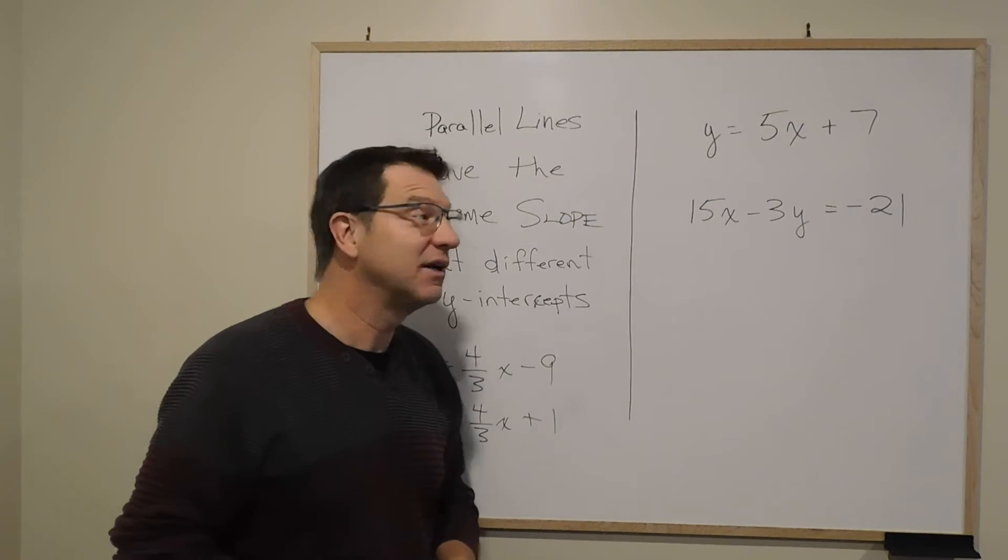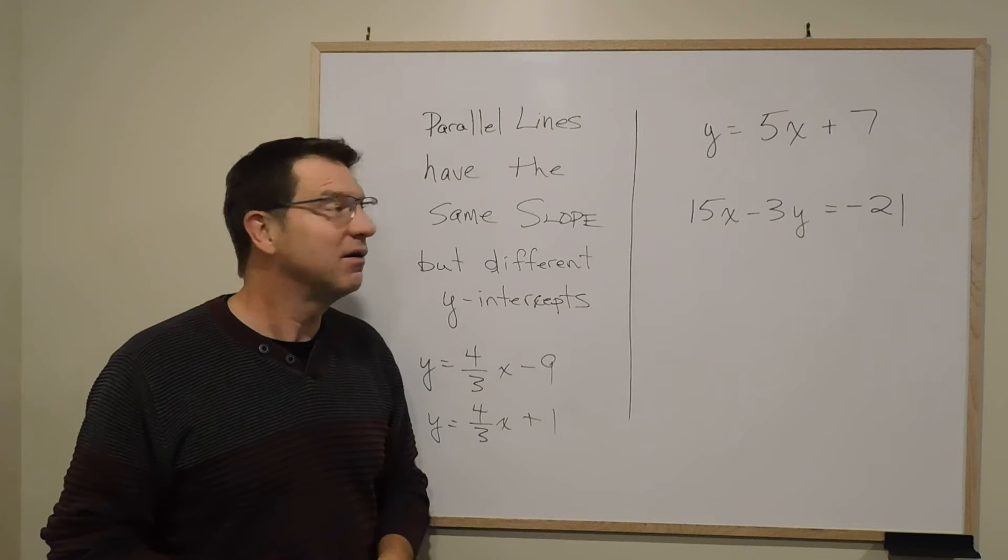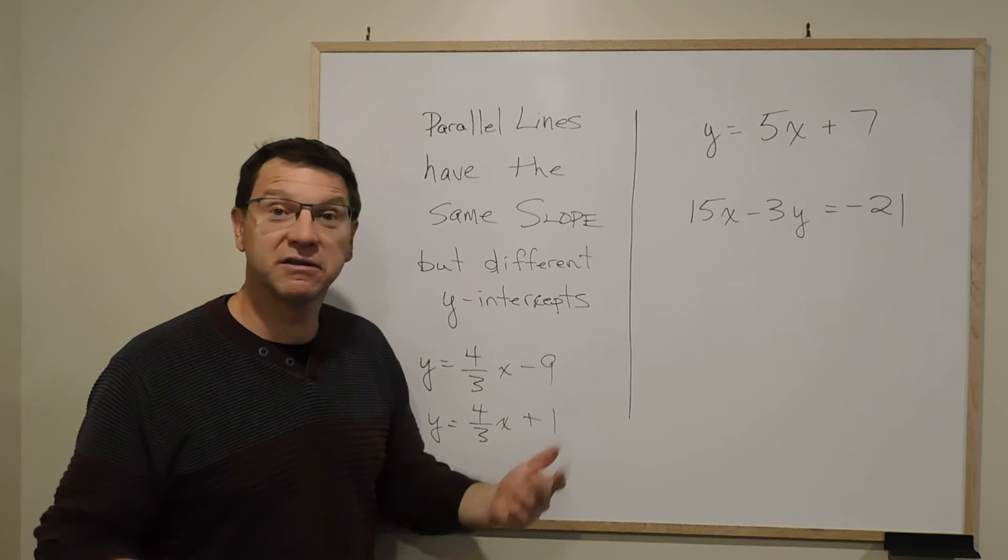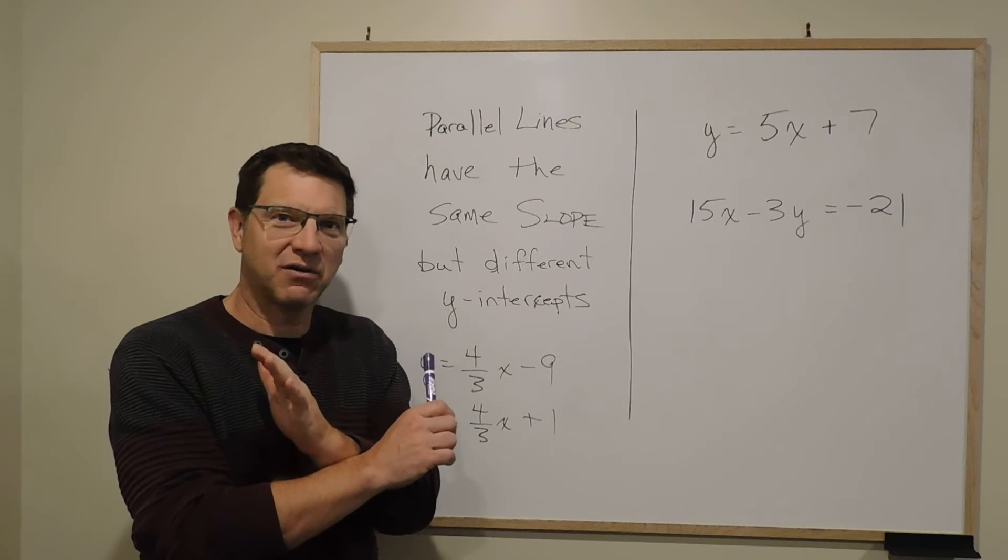One is y = 5x + 7 and the other is 15x - 3y = -21. And you're looking at them—they don't look the same. They don't look like they have the same slopes. So they're probably just two lines that cross.